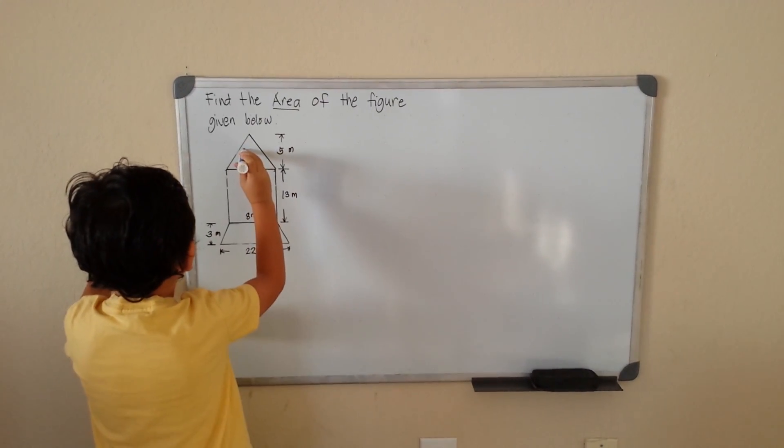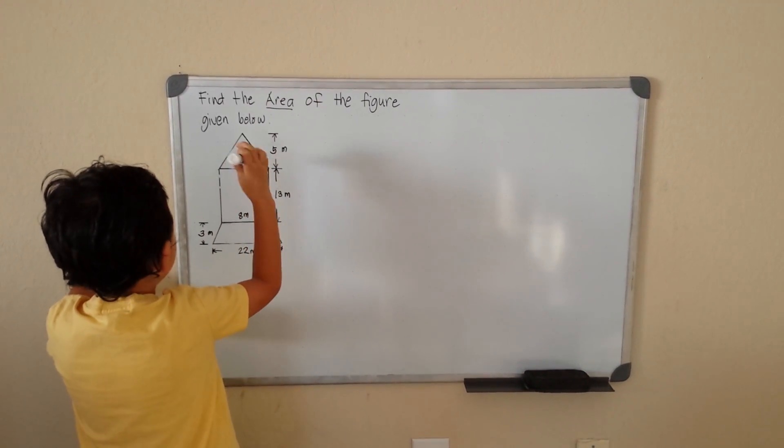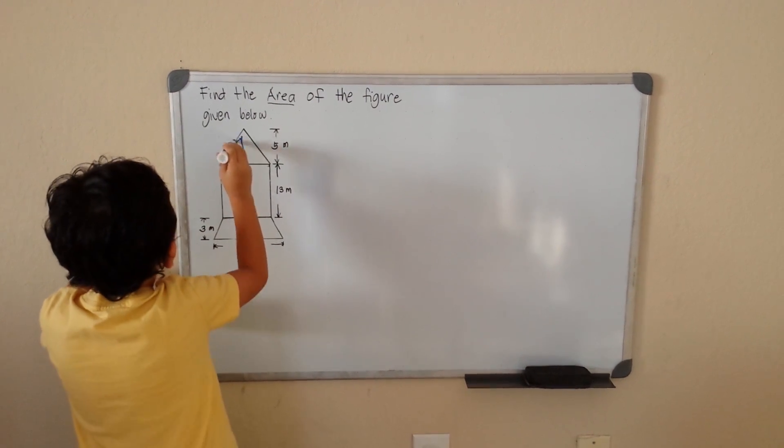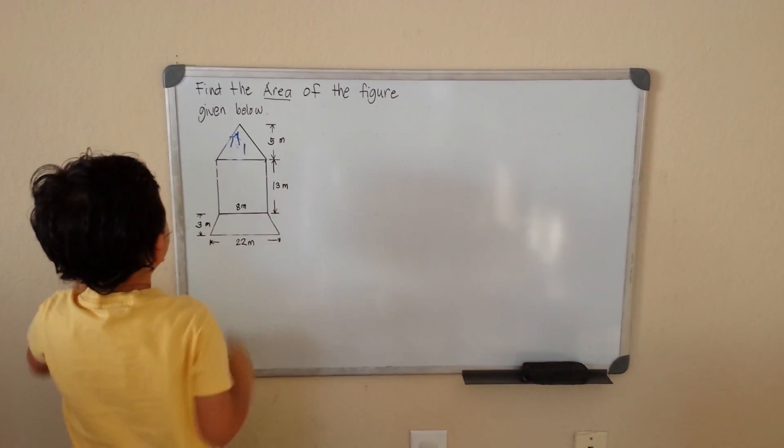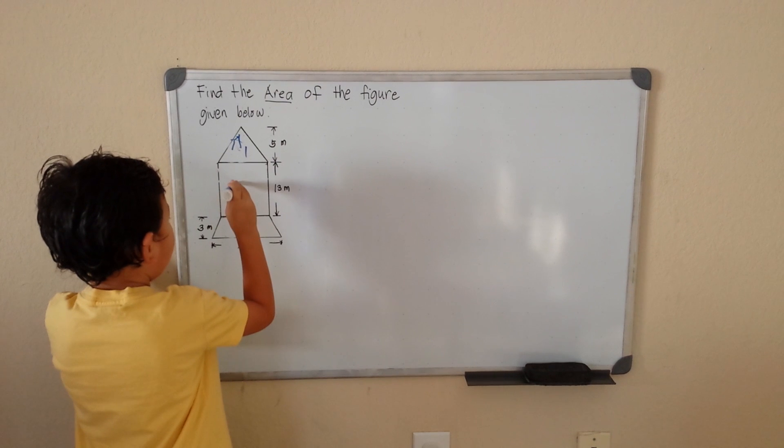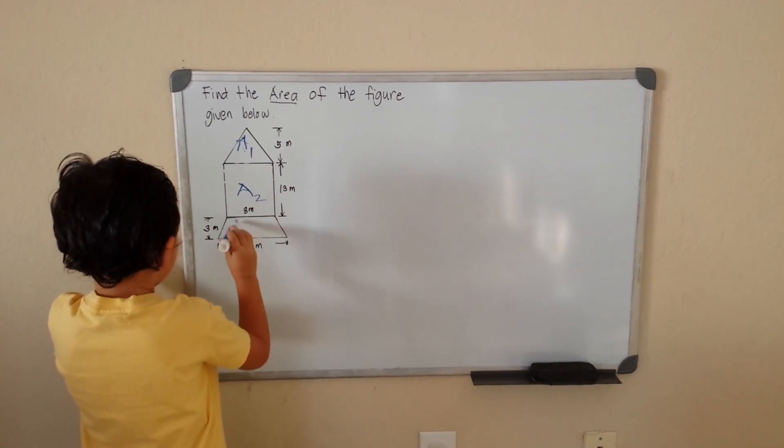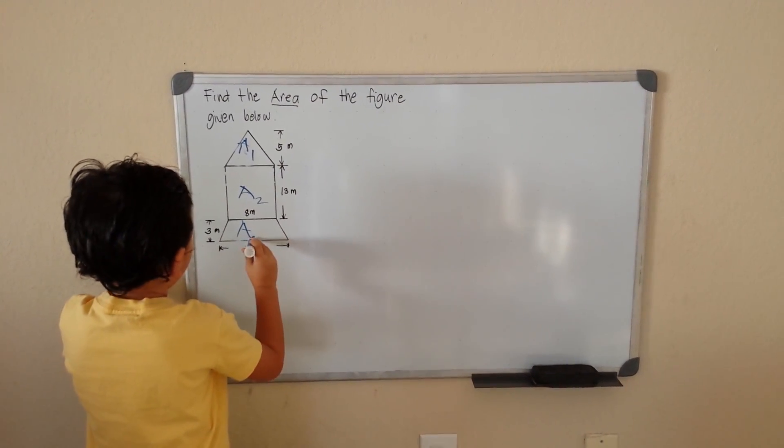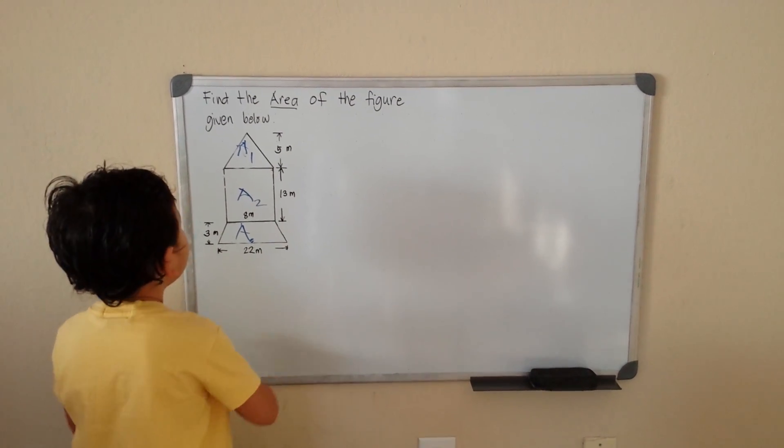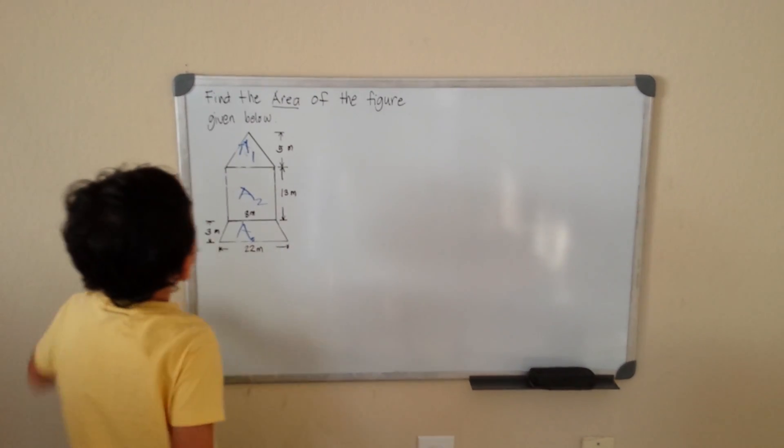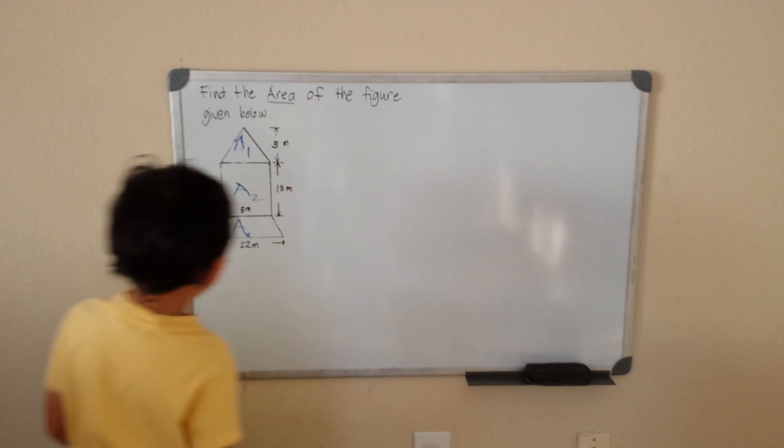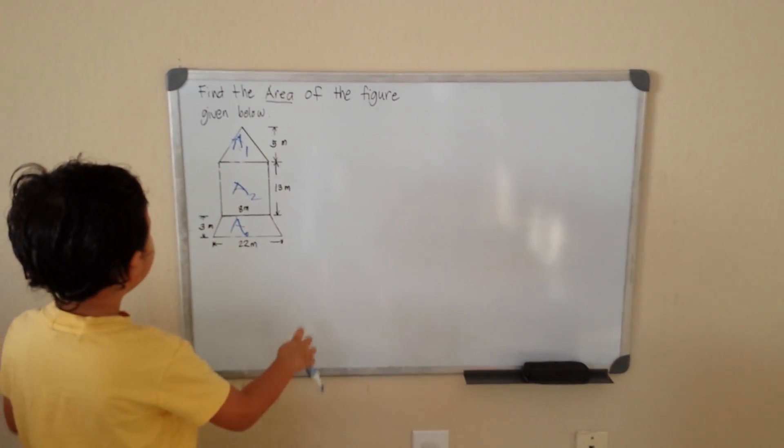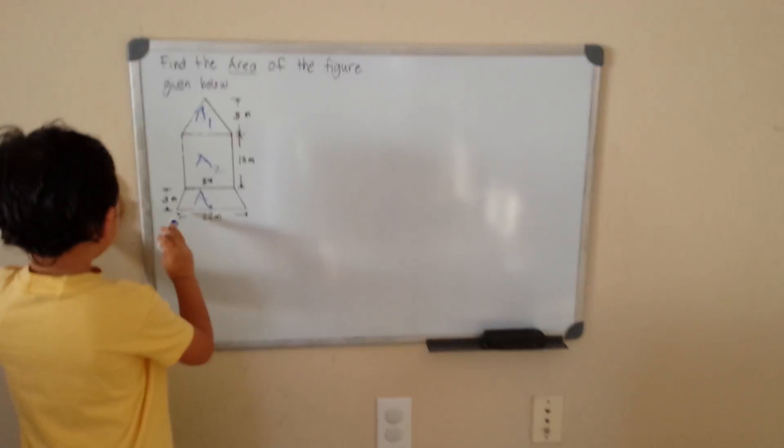So this is a triangle. This is area 1, area 2, area 3. We're going to get the area of the triangle.